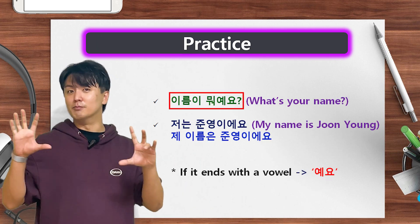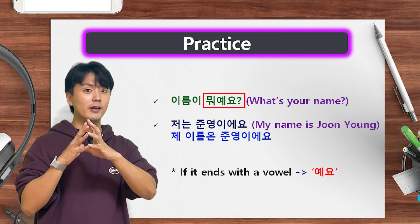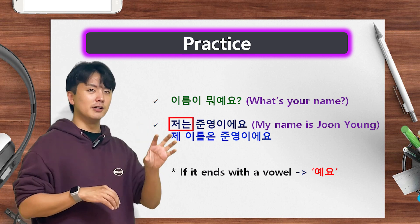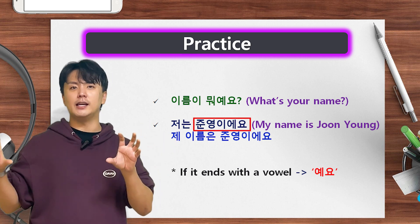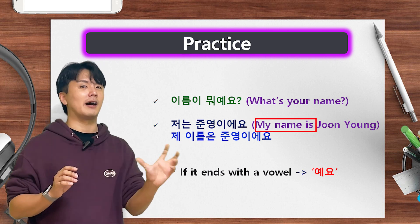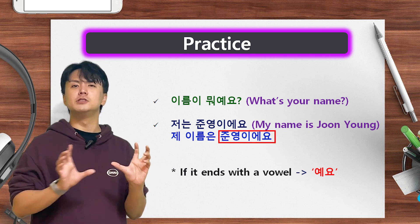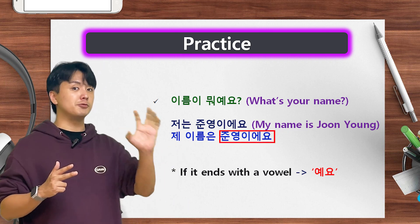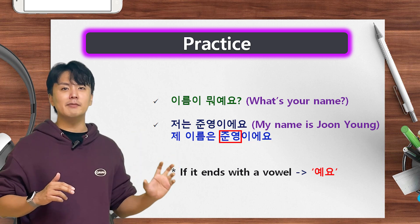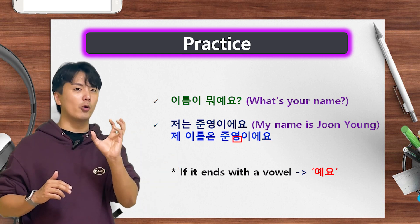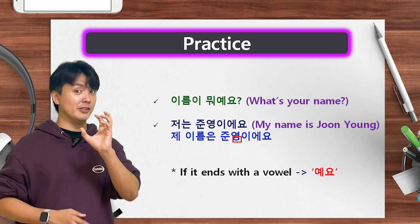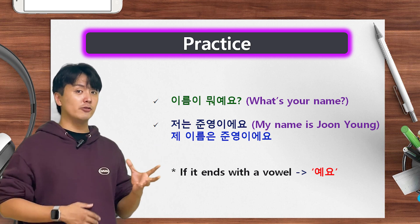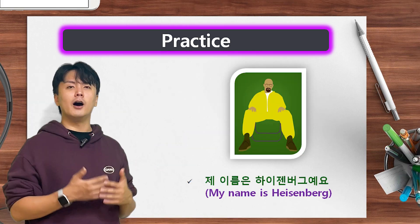What's your name? 이름이 뭐예요? 뭐예요 means 'what is.' My name is 준영 — 저는 준영이에요, or 제 이름은 준영이에요. One thing to remember: in 준영이에요, because the name ends with a supporting consonant — 받침 — you say 이에요. However, if it ends with a vowel, you say 예요.